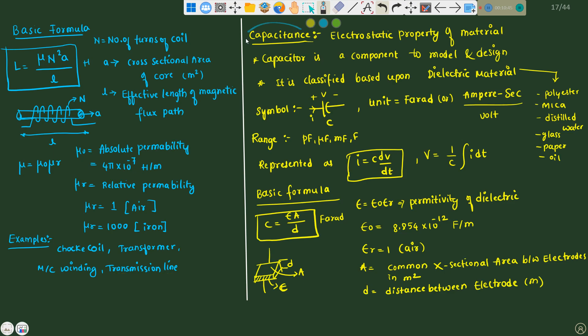If you talk about capacitance, it is an electrostatic property of a material and stores the energy in the form of electrostatic field. Capacitor is a component and it is modeled and designed as per our requirement. It is classified based upon dielectric material. What are all the dielectric materials we have? It is polyester, mica, distilled water, glass, paper, oil. These are some dielectric material. Capacitance is purely depends upon this dielectric material, and symbol is like this. It seems like a battery, yes.